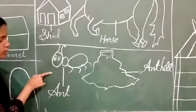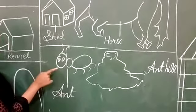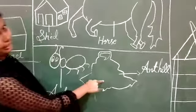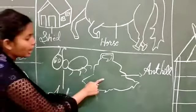What is this children? This is a very small animal. This is an ant. Ant lives in anthill. Ant lives in anthill.